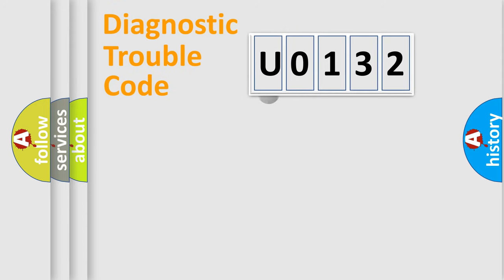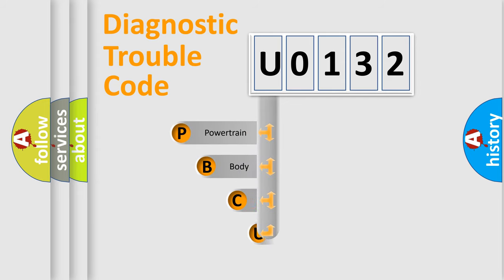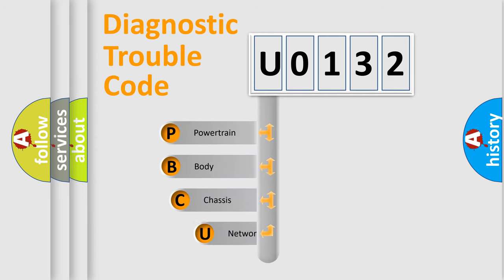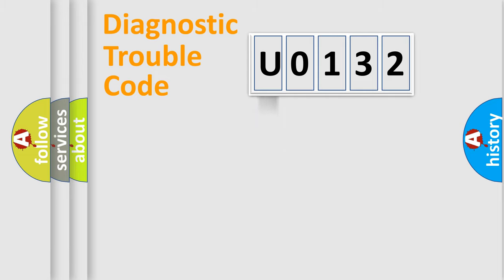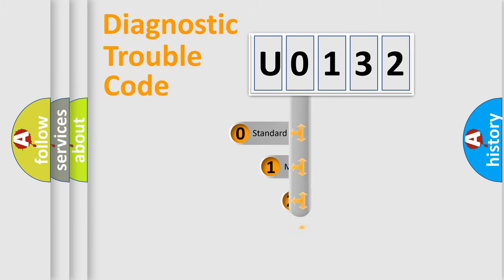First, let's look at the history of diagnostic fault code composition according to the OBD2 protocol. We divide the electric system of an automobile into four basic units: powertrain, body, chassis, and network. This distribution is defined in the first character of the code.